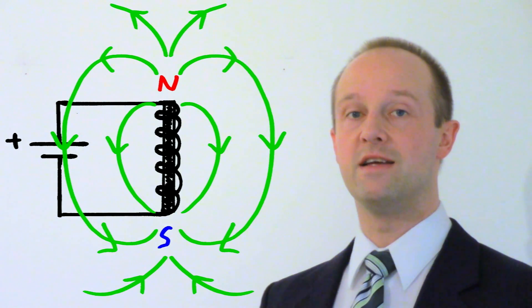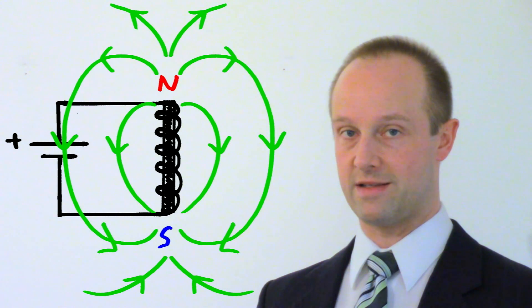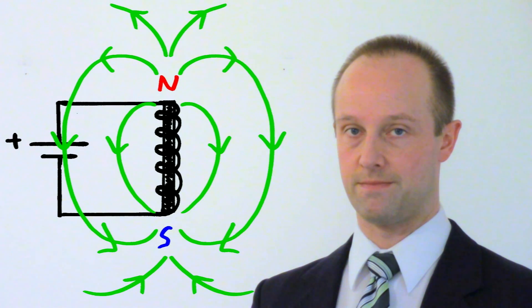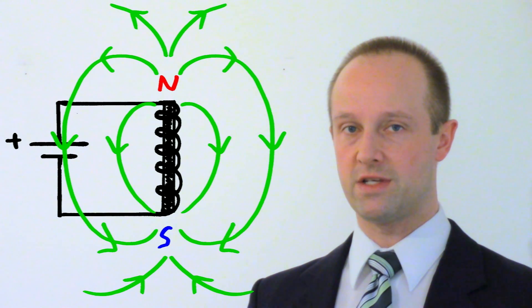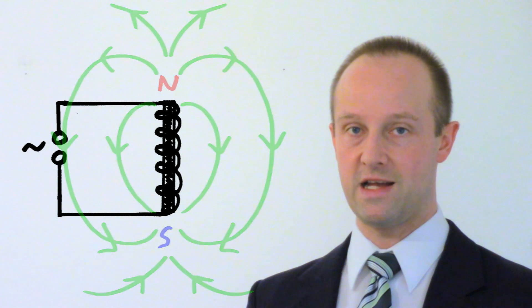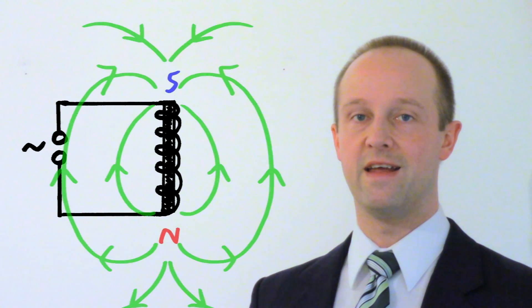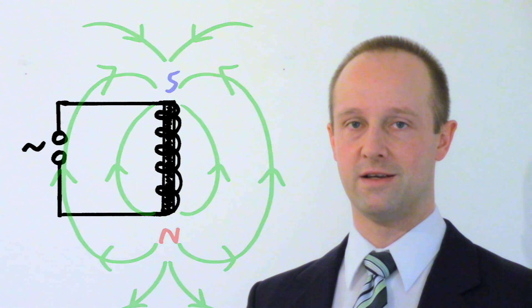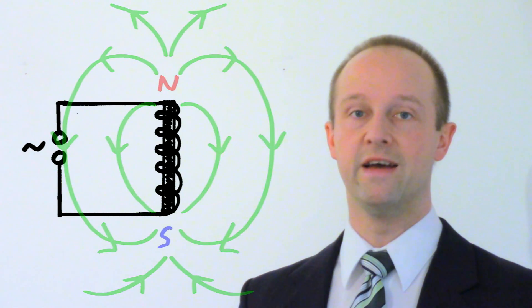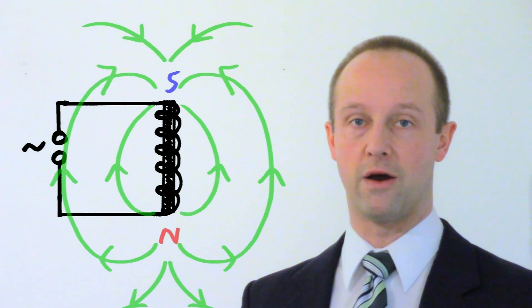At the moment this electromagnet is using a DC supply. That's direct current. It just flows in one direction all the time. Instead of using that what we can do is use an alternating current. That's an AC supply and if we use an AC supply then the current is constantly flowing back and forth instead. It's a little like the tide coming in and going back out again.